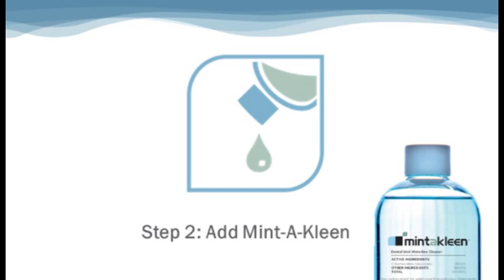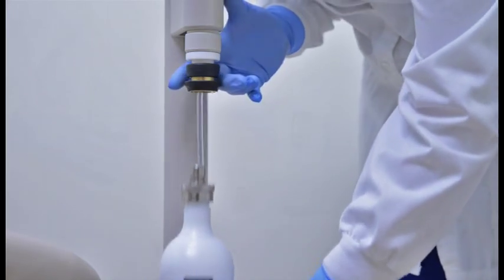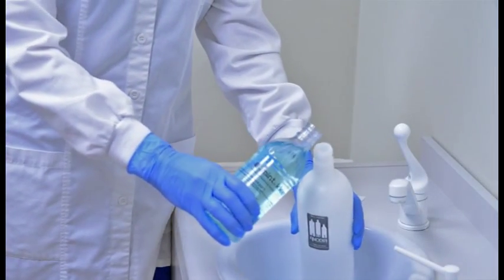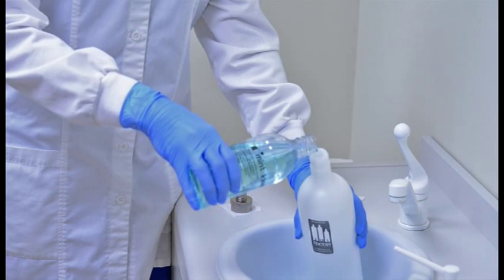Now we are ready for step two, add the Mentoclean treatment. Turn the dental unit off and remove the water bottle. Pour just four ounces of Mentoclean, or one-fourth of the bottle, into your heavy-duty water bottle.